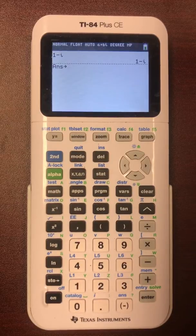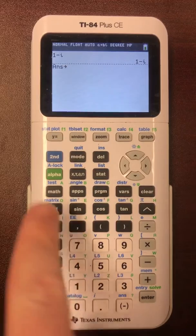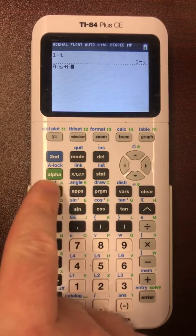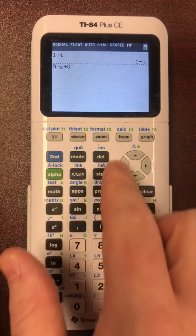You hit stow and we can store it as any letter we want. For example, if we wanted to store it as A, we could hit alpha and A. Or if we want to store it as Q, we could hit alpha then Q. Anything you want.